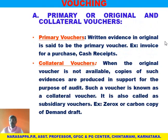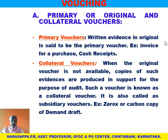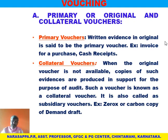What is a collateral voucher? When the original voucher is not available, copies of such evidences are produced in support for the purpose of the auditor. The auditor asks for it and we can provide the collateral voucher. Such a voucher is known as collateral — it is also called a subsidiary voucher because it is not original. Examples include a photocopy or carbon copy of a demand draft. Sometimes the original counterfoil is missing, so the xerox copy can be produced.